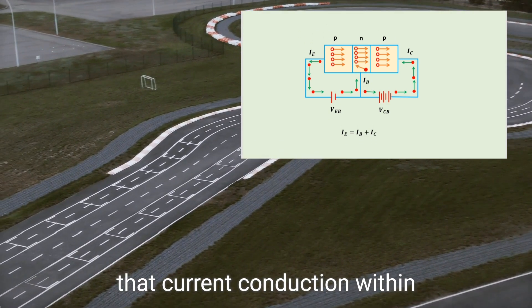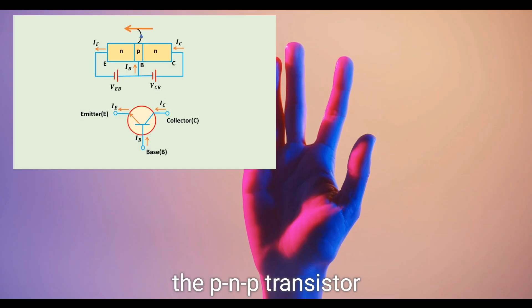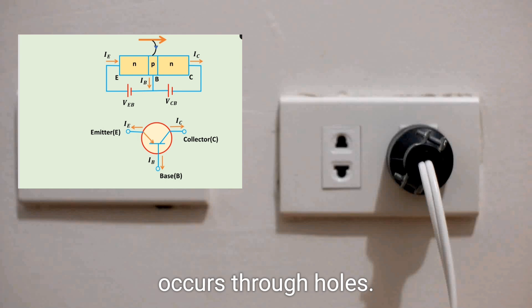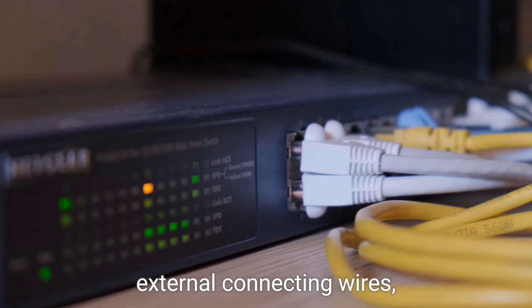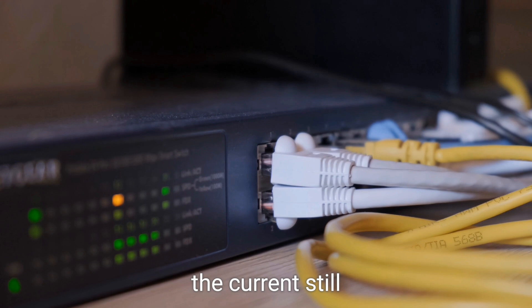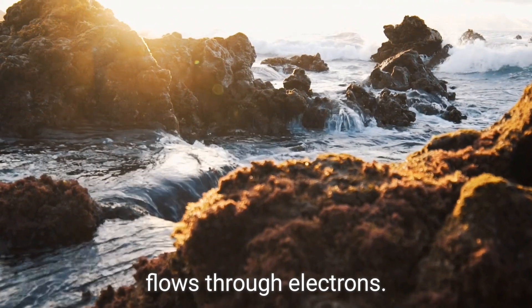It is important to note that current conduction within the PNP transistor occurs through holes. However, in the external connecting wires, the current still flows through electrons.